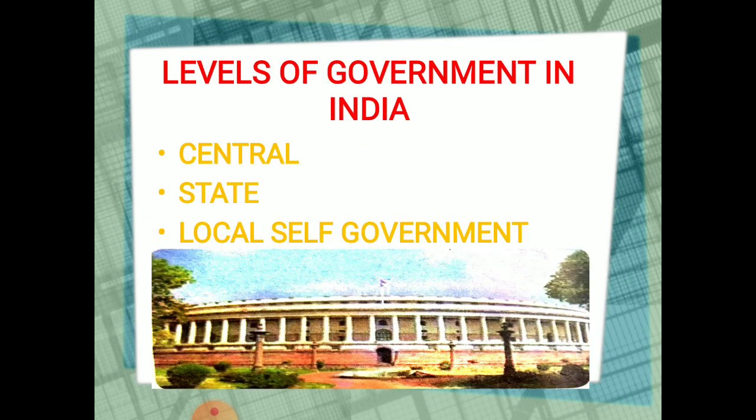Now, the levels of government in India. Basically, in India, there are three levels of government: the central, state, and local self-government. You can discuss these three levels of government with your friends and family members so that you have a better understanding of it, and you can increase not only your knowledge but also update the knowledge of the people in your surroundings.